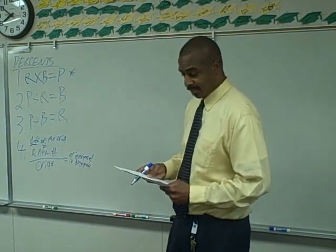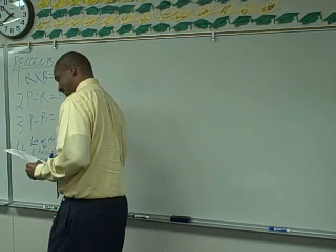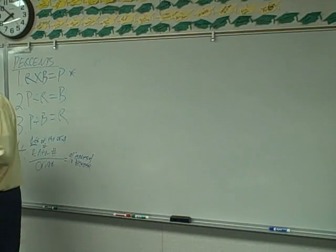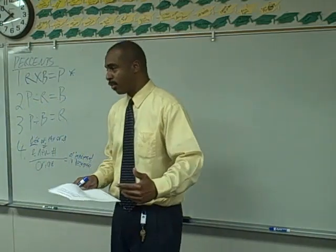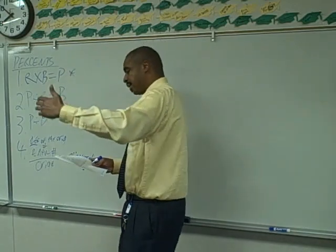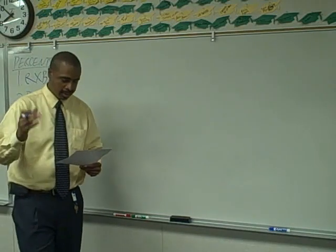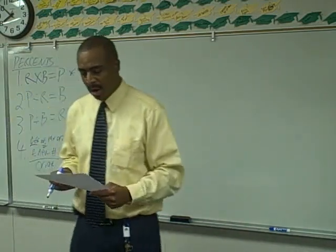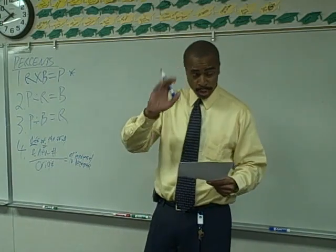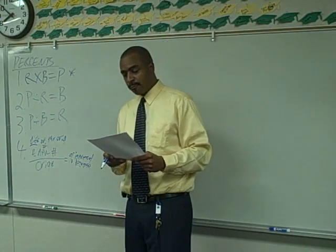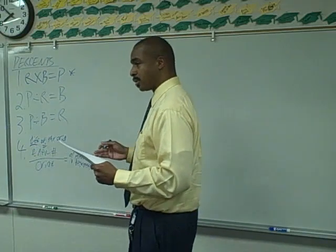Number one. Pearl earns $15 per hour. Everything we did up until now, those are the skill work. Now we're going to the word problem work. Pearl earns $15 per hour. She gets time and a half when she works over eight hours in a work day, and double time for any hours worked on weekends. What percent of Pearl's total salary is premium pay — overtime and double time?